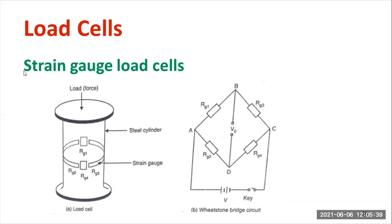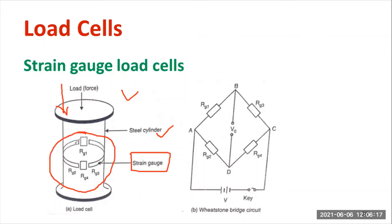The third type is the strain gauge type load cell. There will be a cylindrical or cubic column made of elastic elements. Inside there will be strain gauges — RG1, RG2, RG3, RG4 — different types of resistive strain gauge elements. A force is applied directly on the steel cylinder. As force is applied, the resistance value of the strain gauges varies. These elements are connected in a Wheatstone bridge. Initially, the bridge is balanced because no force is applied, and the galvanometer shows null deflection.